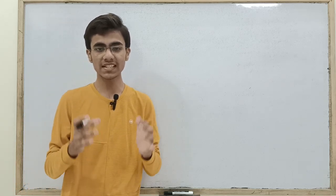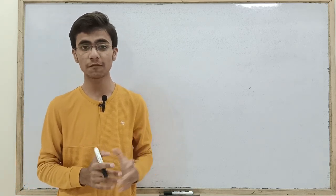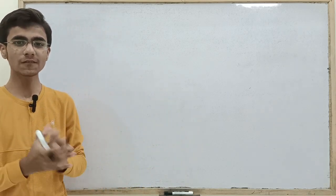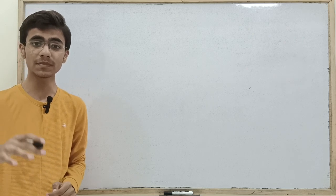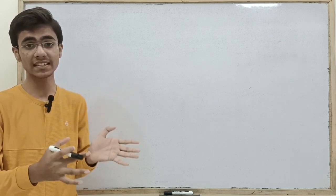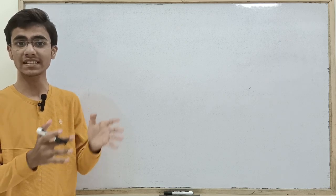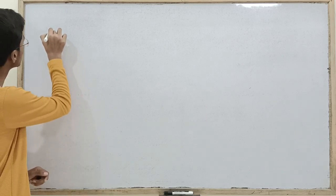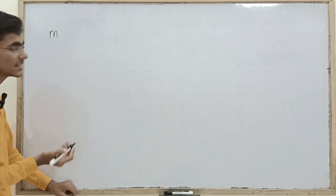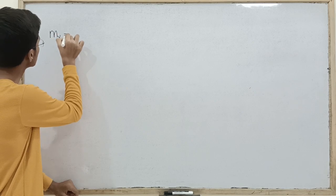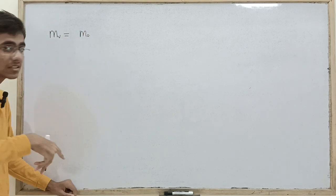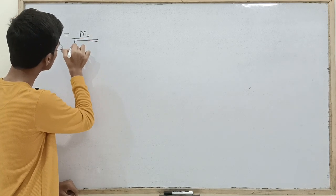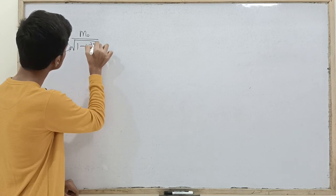We will discuss the relativistic mass formula. We know how the mass of an object depends on its velocity in special theory of relativity. Its derivation is in the principle of relativity, and we will see that its derivation is actually very simple yet leads to great conclusions. The formula is M₀ divided by the square root of 1 minus V² by C².